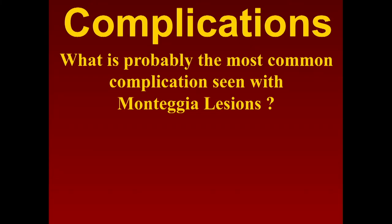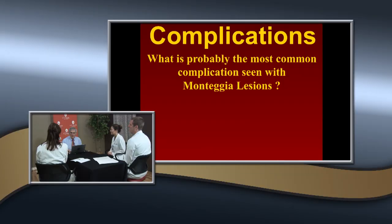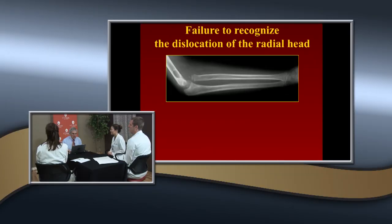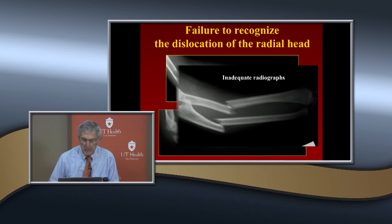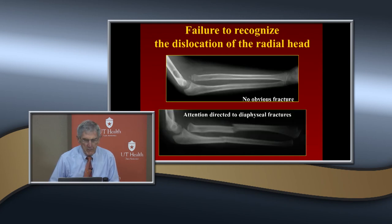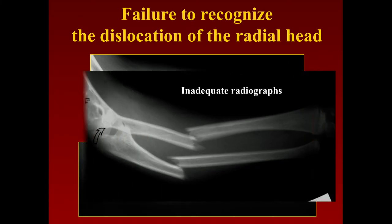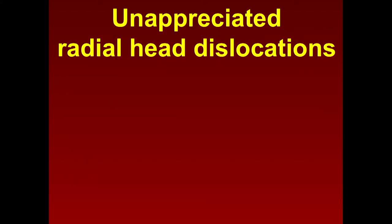The most common complication in Monteggia lesions is failure to recognize the dislocation — persistent anterior radial head dislocation. This one here said there was no fracture; the attention was directed towards the diaphyseal fractures. They had inadequate radiographs initially. These are the things that can occur.